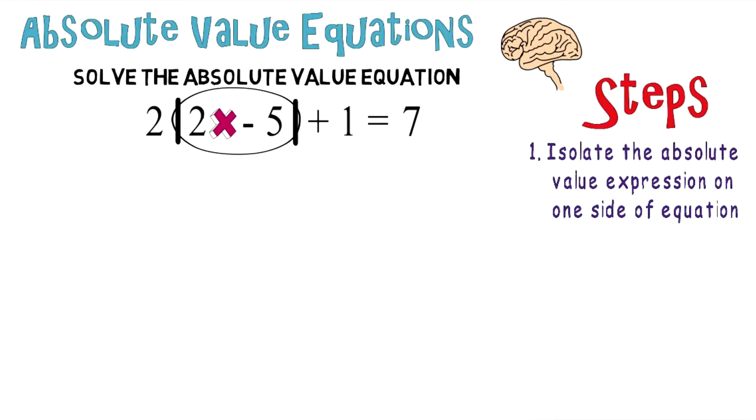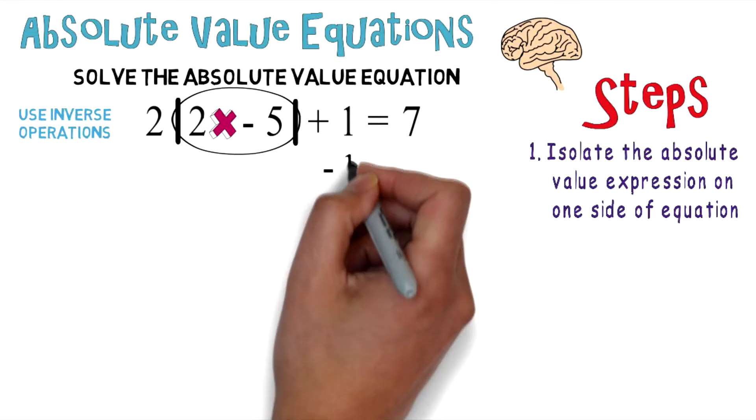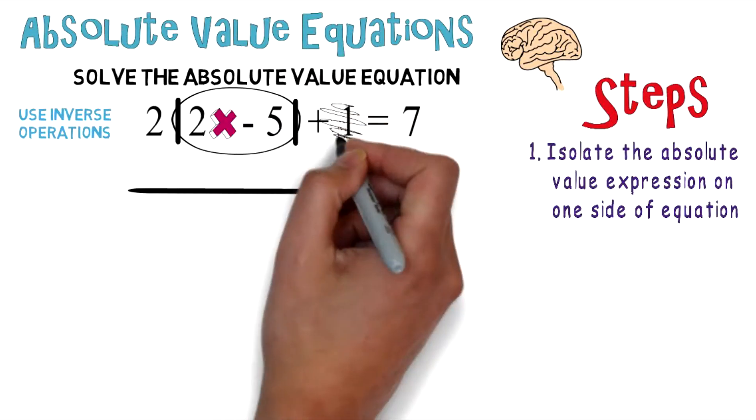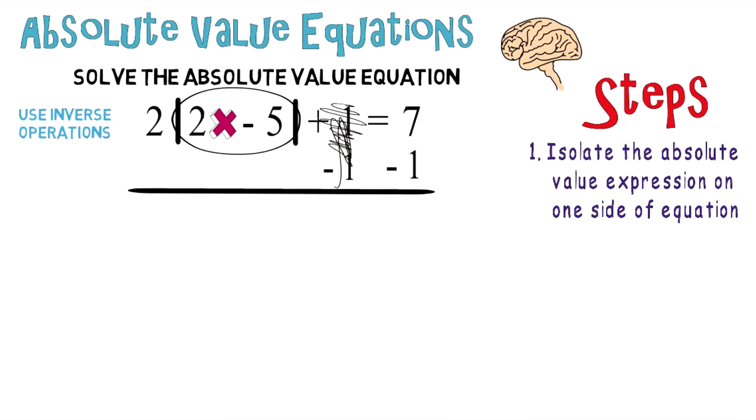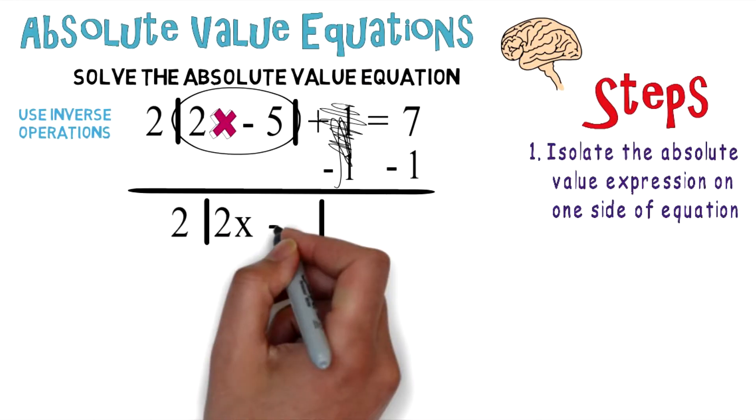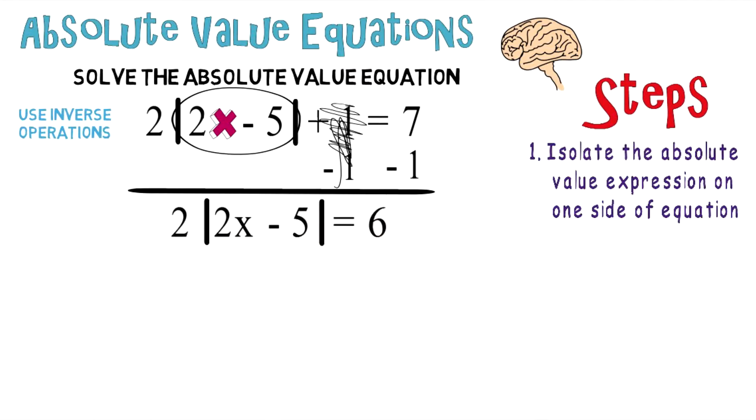This is the absolute value expression. So you want it isolated all by itself, and you're going to use inverse operations. So the first thing we're going to do is subtract one from both sides of the equation. Positive one and negative one cancel out. And now you're left with 2|2x - 5| = 6.